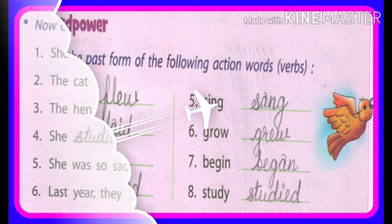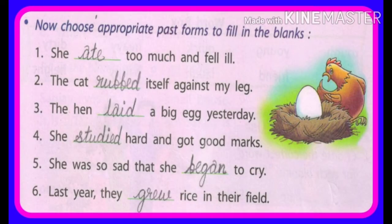And the next. Now choose appropriate past forms to fill in the blanks. जो ऊपर हमने किया, past form किया, उन में से चूज करके यहाँ पे जो खाली जगह दिया गया है उसमें भरना है. Number one: He ate too much and fell ill. वो बहुत जादा खाई और तबियत खराब हो गया — ate.